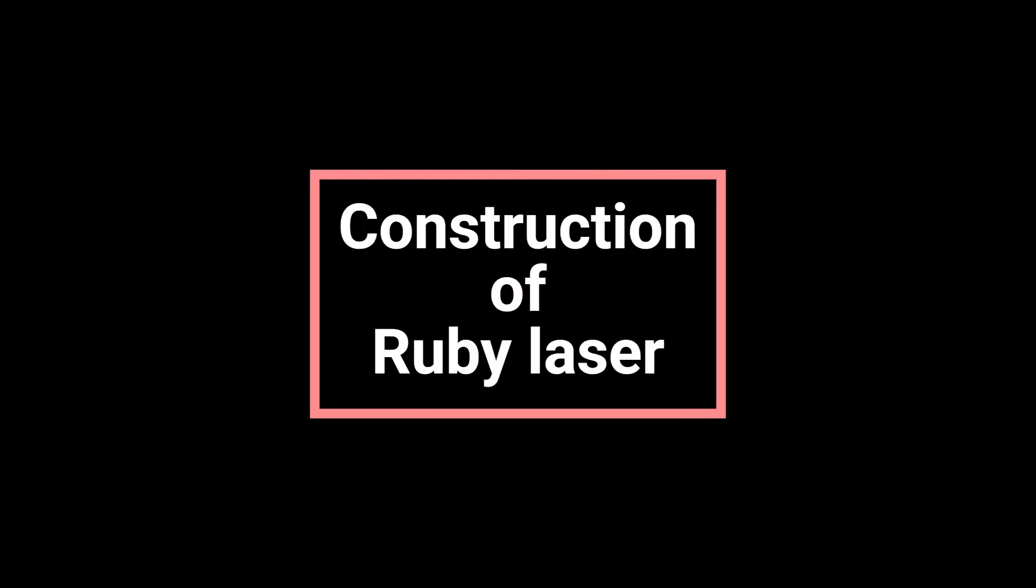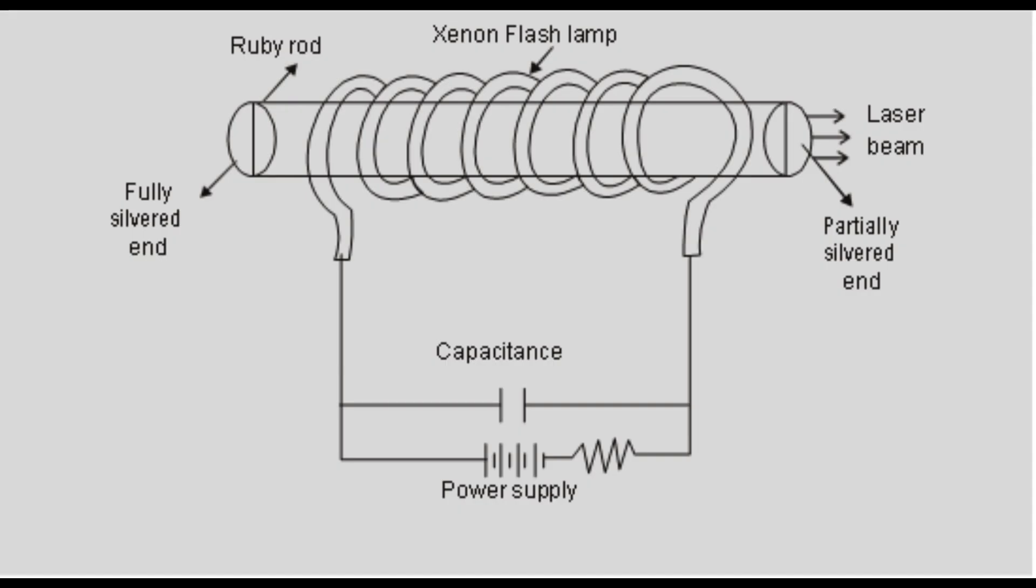Construction of Ruby Laser. A ruby laser consists of three important elements: laser medium, the pump source, and the optical resonator.